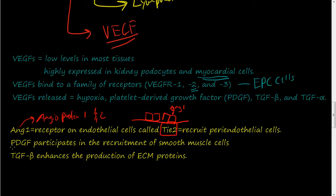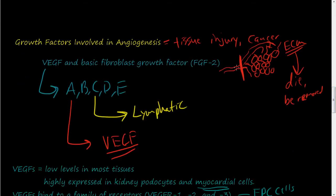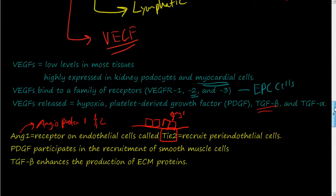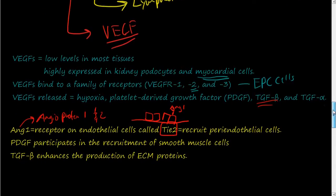PDGF — platelet-derived growth factor — participates in the recruitment of smooth muscle cells, analogous to peri-endothelial cells for larger vessels. TGF-beta, the transforming growth factor beta, enhances the production of ECM proteins. As this blood vessel expands into the extracellular matrix, the ECM has to be removed and modified, and TGF-beta helps rebuild and remodel those ECM proteins after blood vessels move into the area.